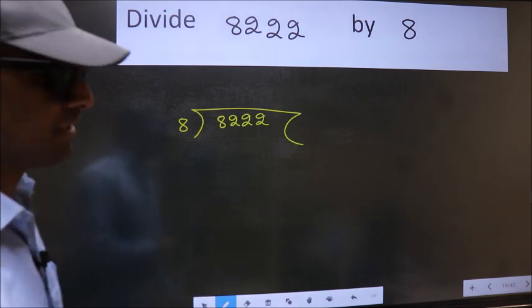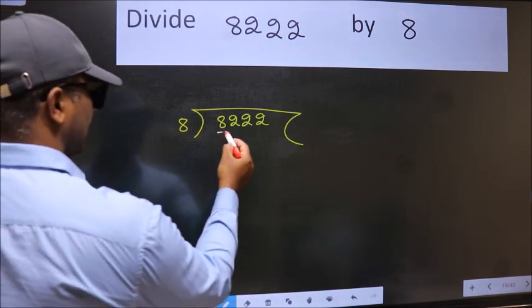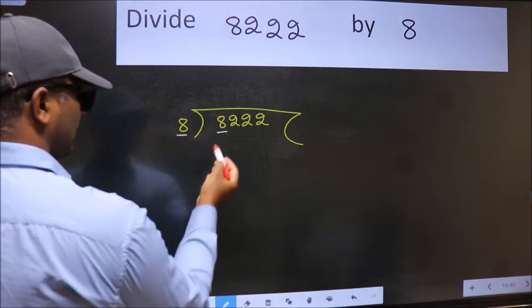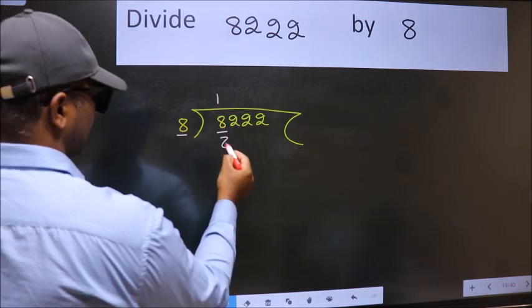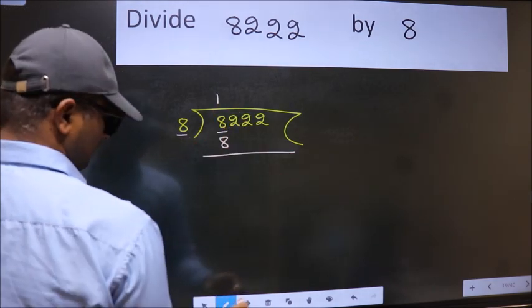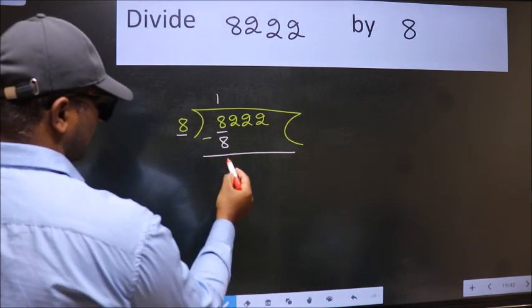Next, we have 8 and 8. When do we get 8 in the 8 table? 8 once is 8. Now we subtract and get 0.